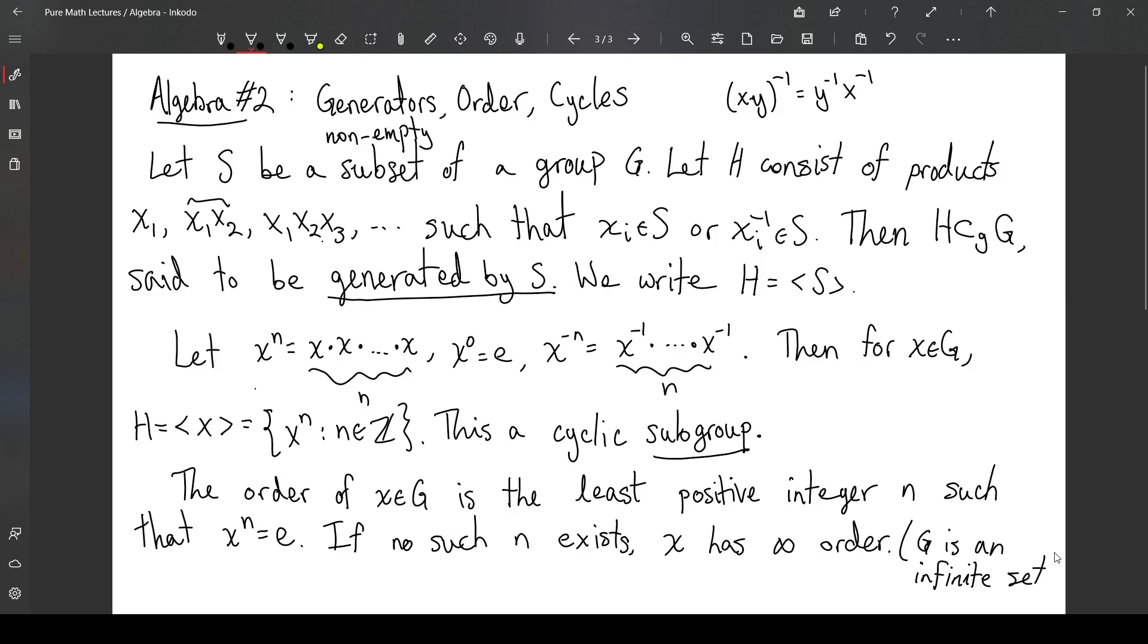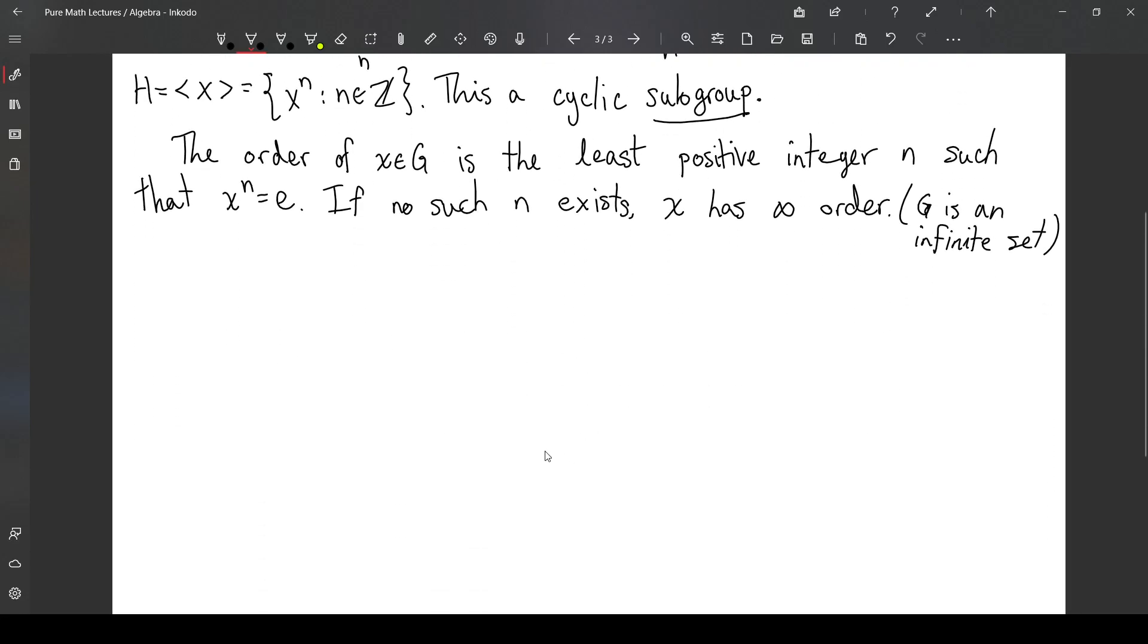And of course, notice for this to be the case, then G is an infinite set. So notice if I have a finite set, then x must have some finite order, because every time I multiply x with itself, I am necessarily getting another element of G. And if I keep multiplying x with itself over and over again, I have to get the identity. Now, that may not be completely obvious at first. I could just keep getting other elements that aren't the identity.